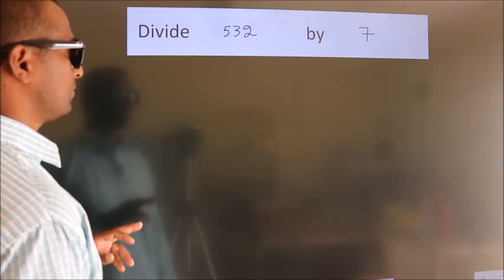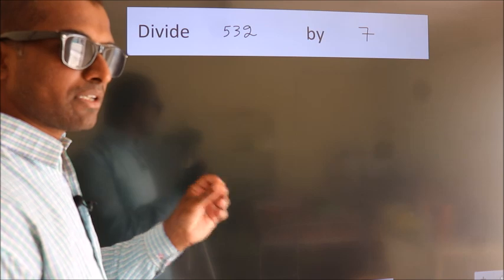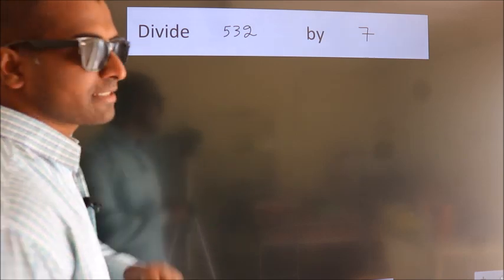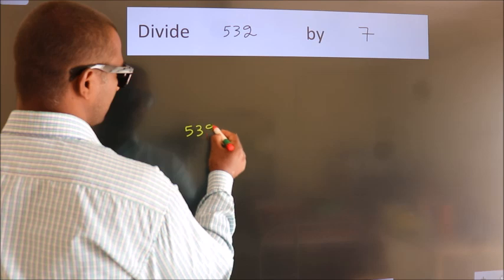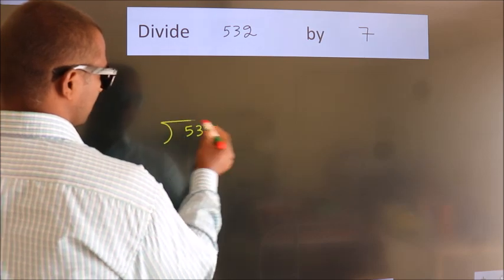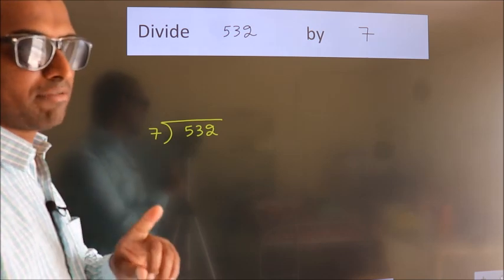Divide 532 by 7. To do this division, we should frame it in this way. 532 here, 7 here. This is your step 1.